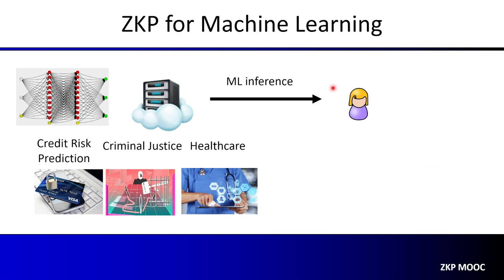The first application I'm going to talk about is for machine learning. As you may already know, machine learning is used everywhere in our daily lives now. For example, it can be used in financial applications for credit risk predictions, and it is being used in criminal justice to predict the future recommitment of crimes, and also is widely used in the healthcare domain.